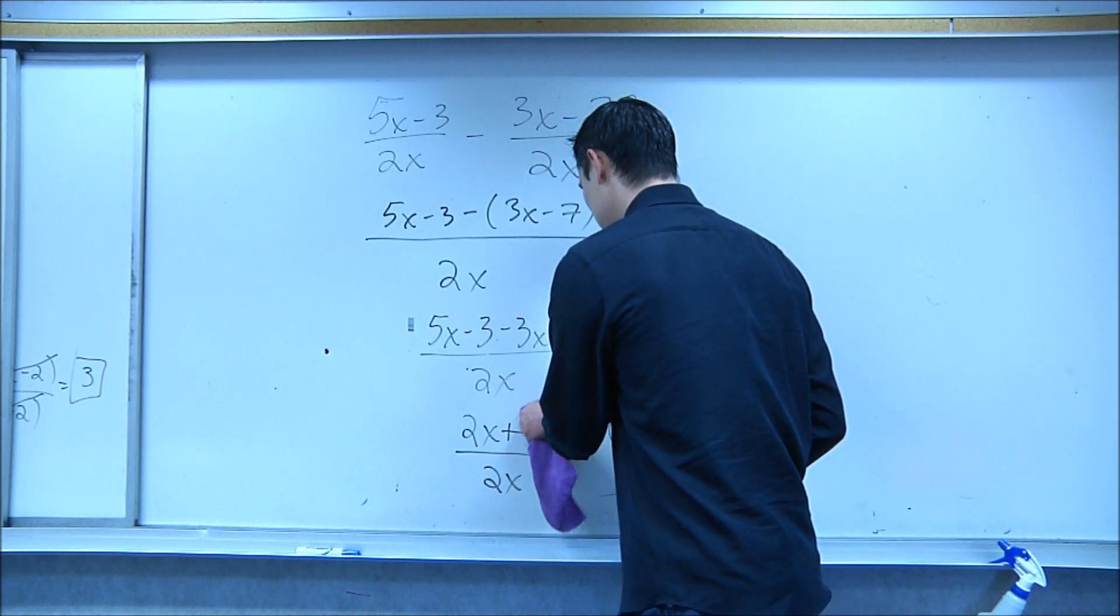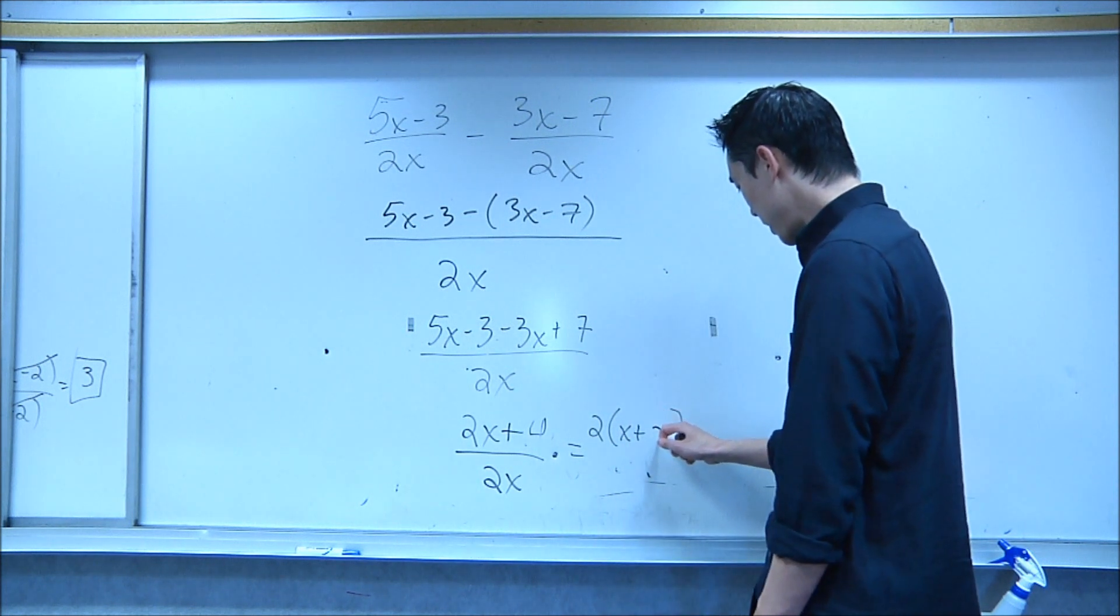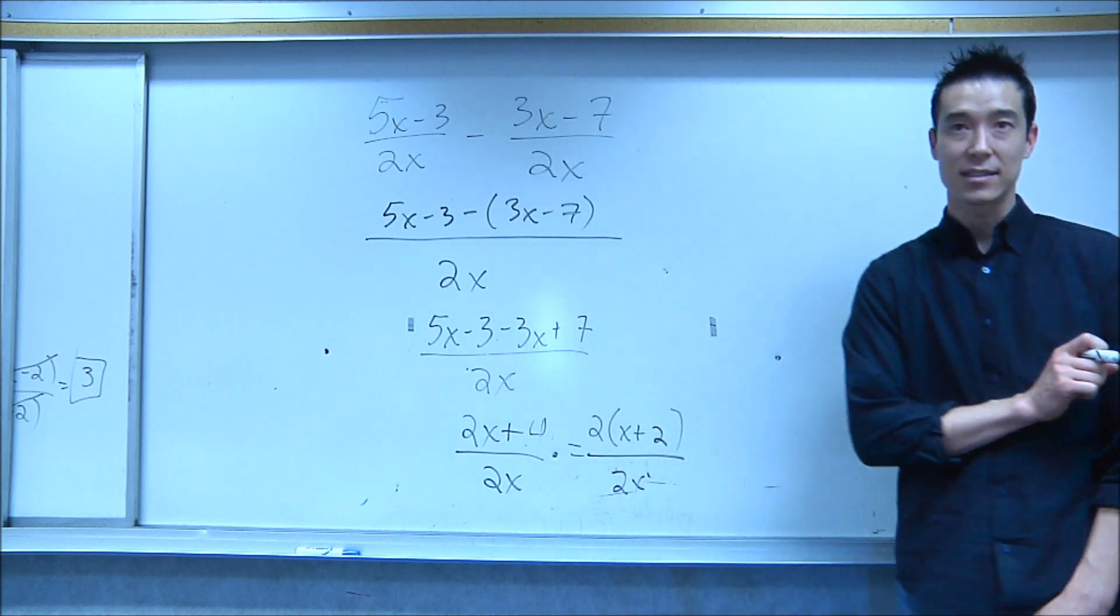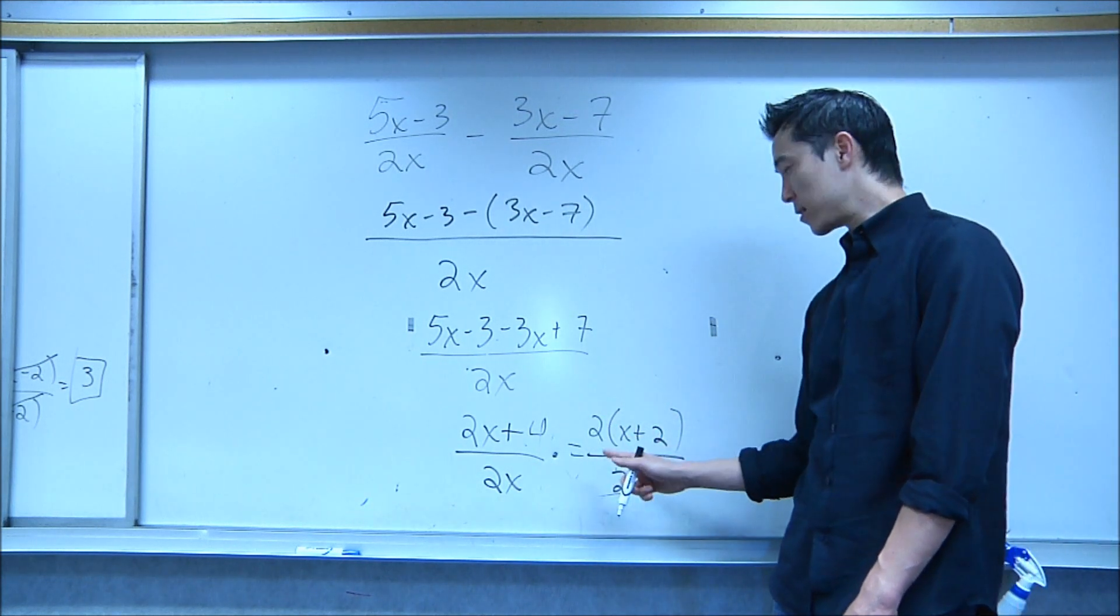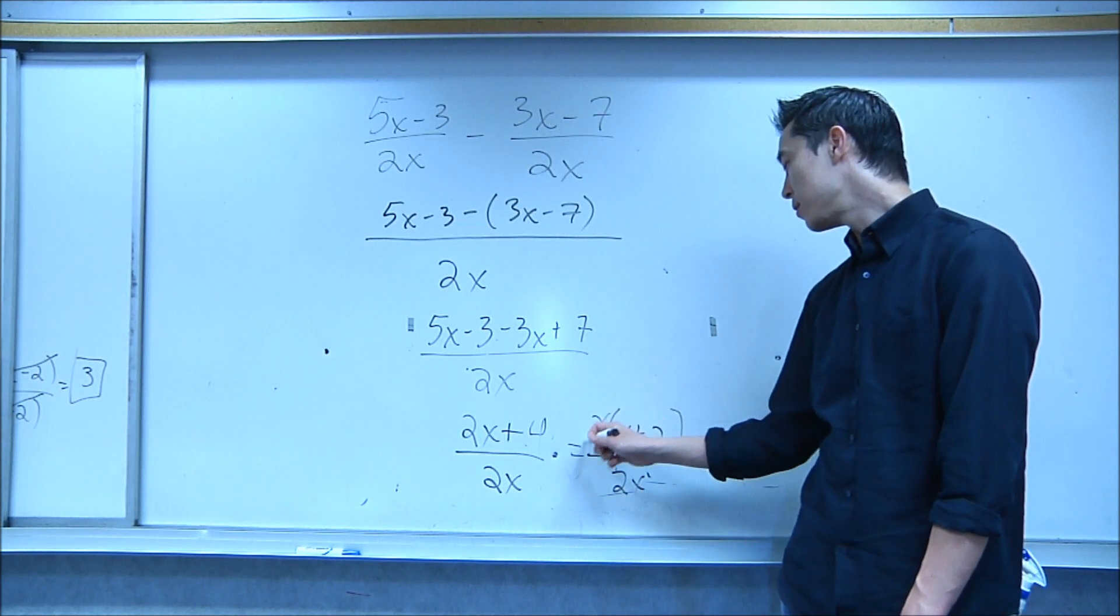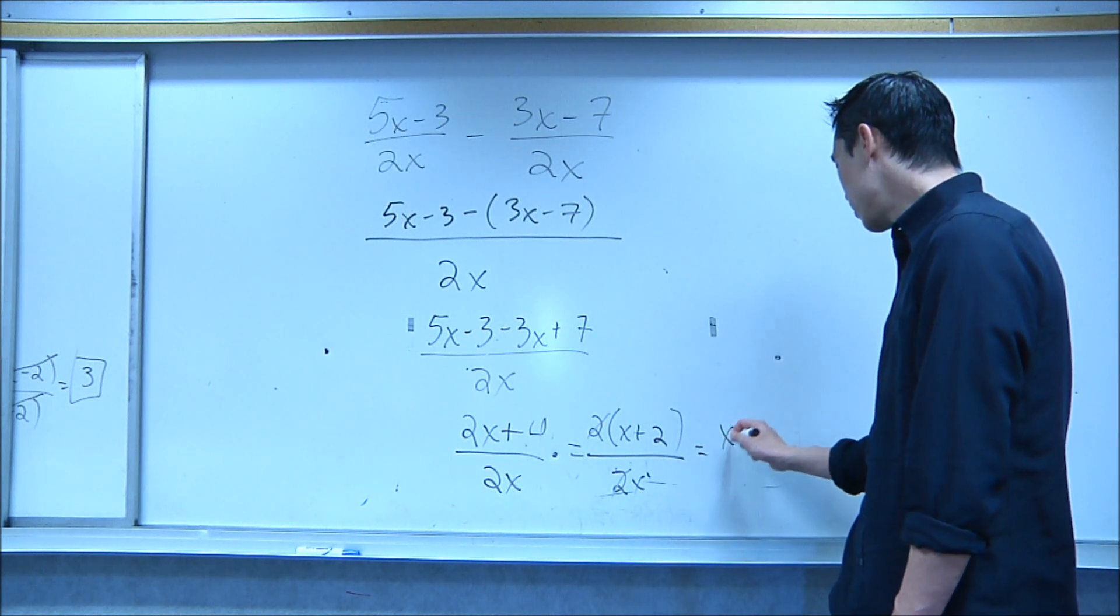I was testing you guys. You guys are awesome. 2x plus 4. x plus 2. Okay, do we have this? 2 parentheses x plus 2 divided by 2x. Now at this point, these are factors. This times this. This times this. Then you can reduce. That 2 goes away. That 2 goes away. Your final answer is x plus 2 over x.